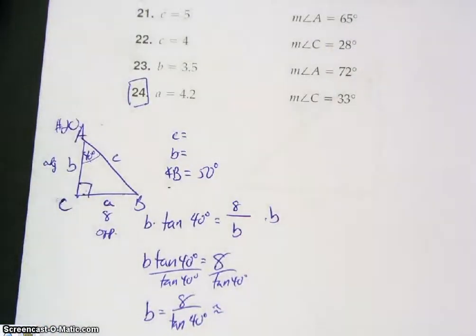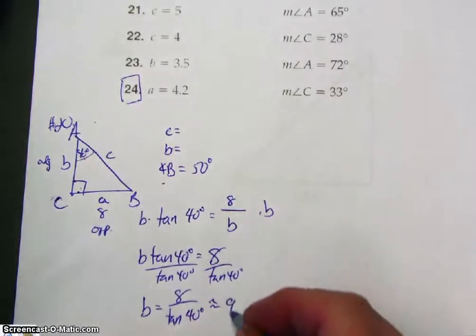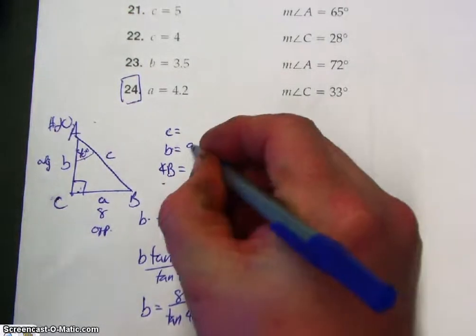So approximately, using calculator, so 8, make sure you're in degree mode. So we have 8 divided by tangent of 40, gives me 9.5.